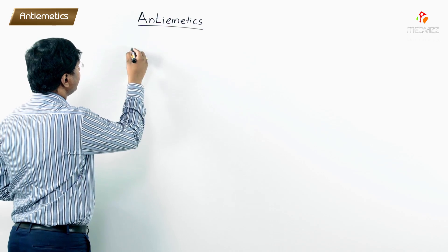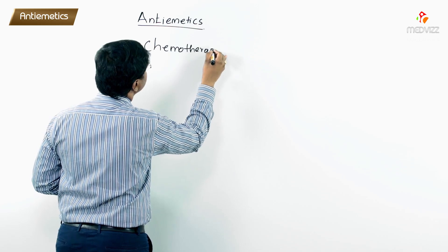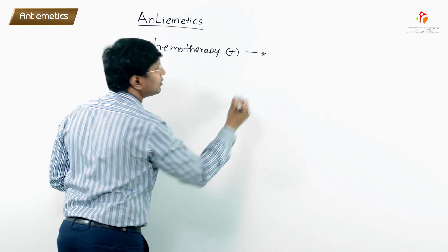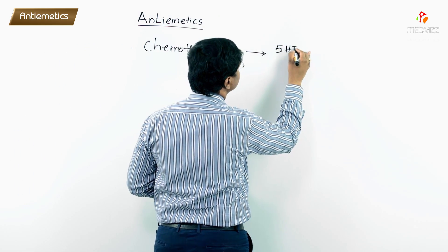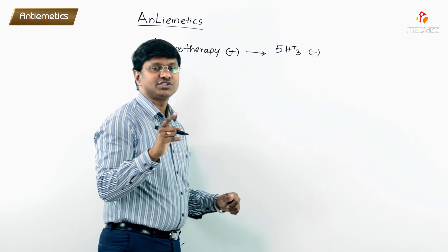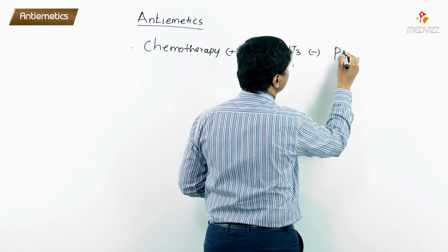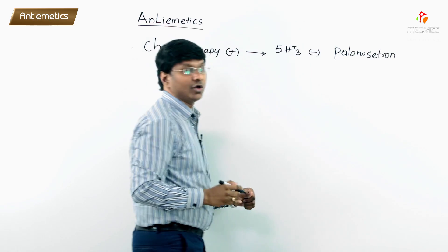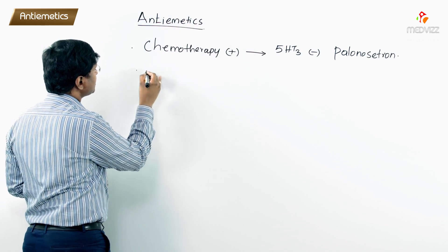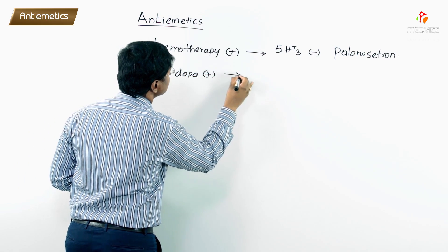In case of chemotherapy-induced vomiting, the drug of choice is a 5-HT3 antagonist. The specific 5-HT3 antagonist we give is palonosetron.